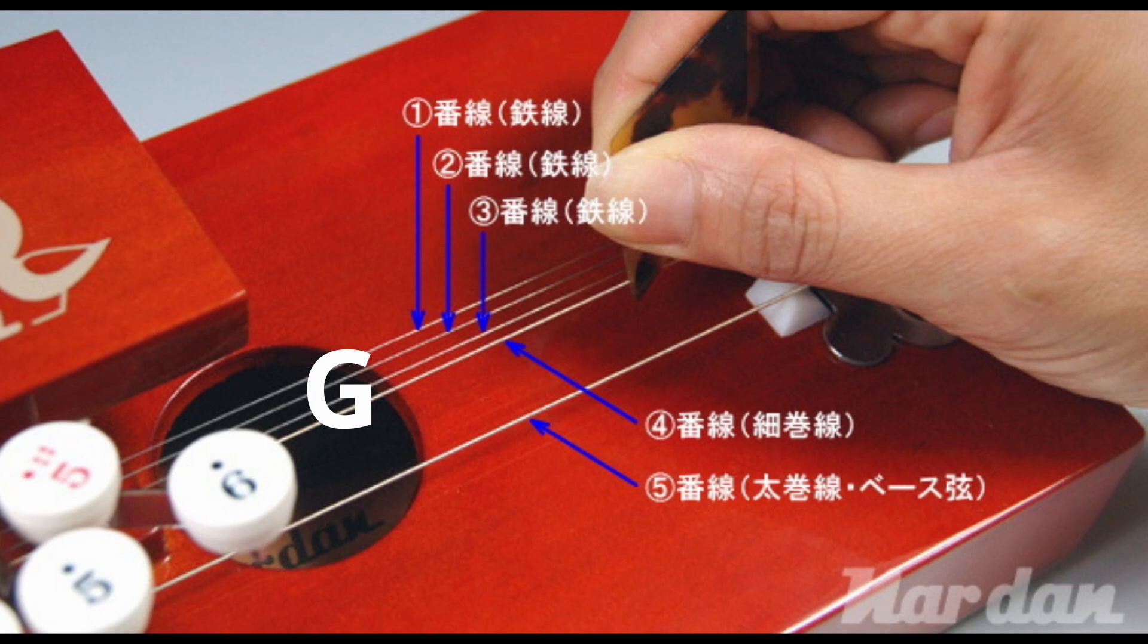The bottom bass string is then dependent on what we want to play. Often times, if we're in C standard, we'll just go ahead and tune that to C as well, so that we can hit it when we're hitting the 1 button. This can of course be changed around, you can tune that to G, D, whatever fits your liking of what you're playing.